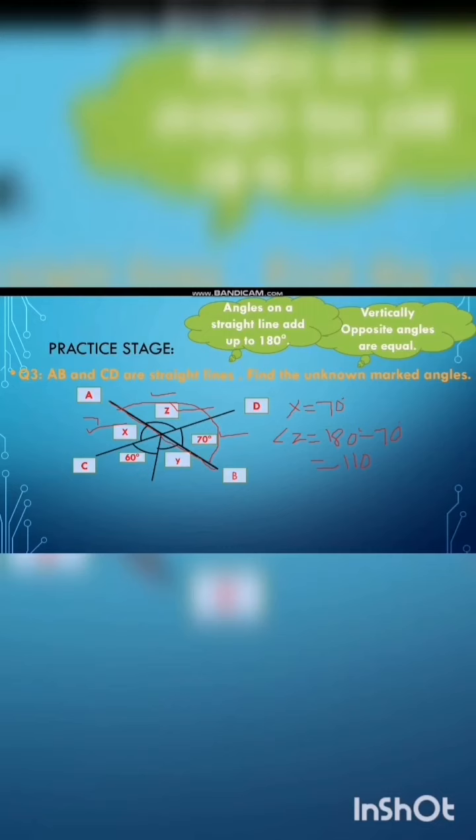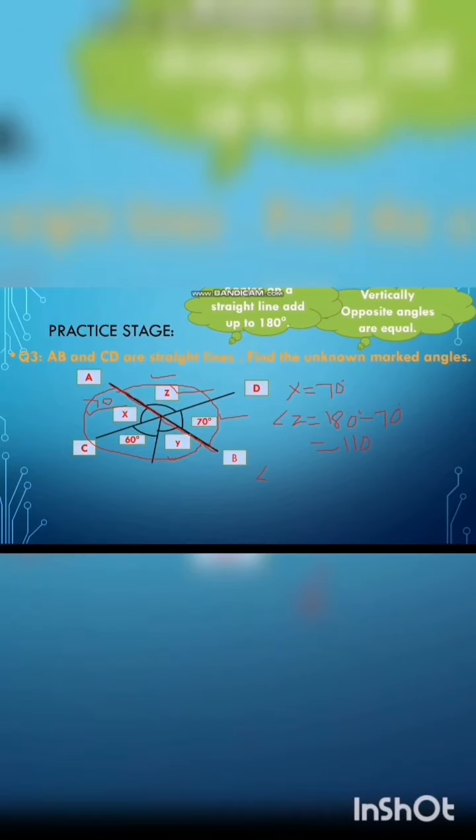Since we found x, we write 70 degrees there. Now to find angle y, we have three angles on a straight line AB: x, y, and 60 degrees. We have x equal to 70 degrees and 60 degrees, so angle y is equal to 180 minus 60 minus 70, and the answer is 50 degrees.